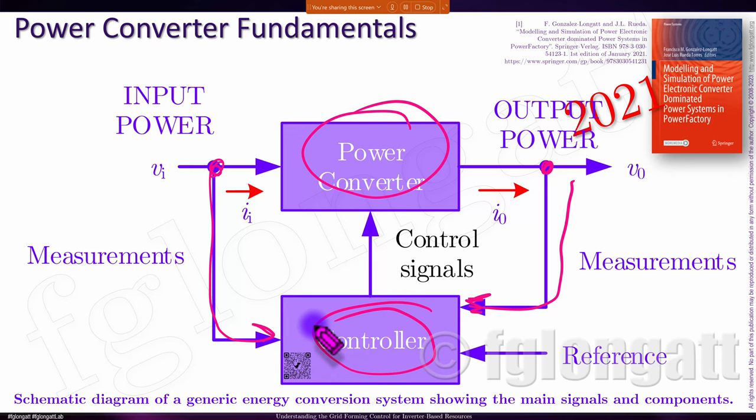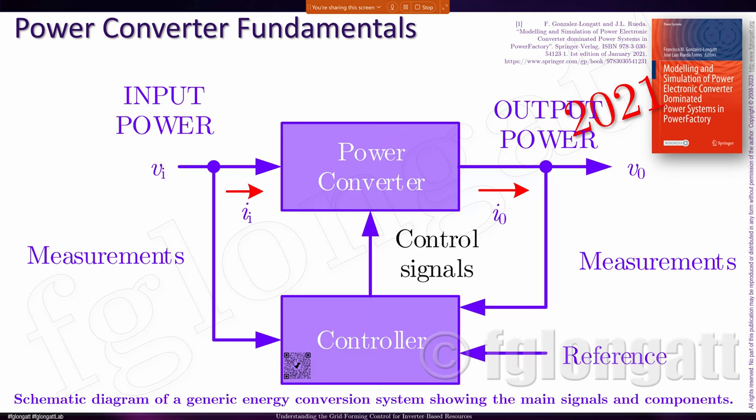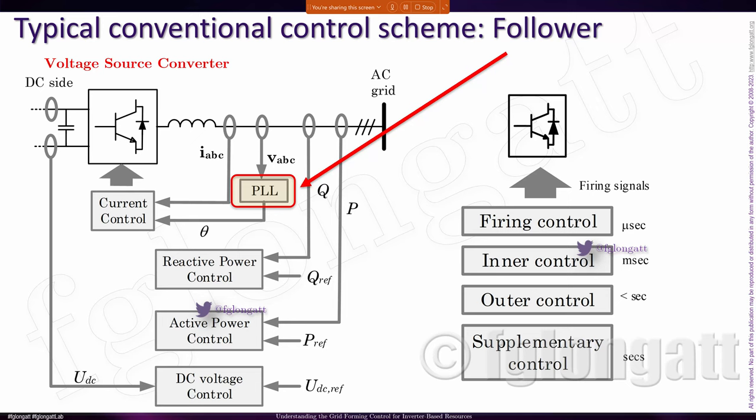A classical power converter consists of the power converter itself — basically the device with commutation switches — a set of sensors that send signals to the controller. Here is where the important work happens, because the controller is basically what mimics and defines the behavior of the power converter. In this presentation I will talk about the power converter switches and also the filter related to the power converter, since it's relevant for modeling and simulation, but also I will discuss control techniques for the power electronic converters.